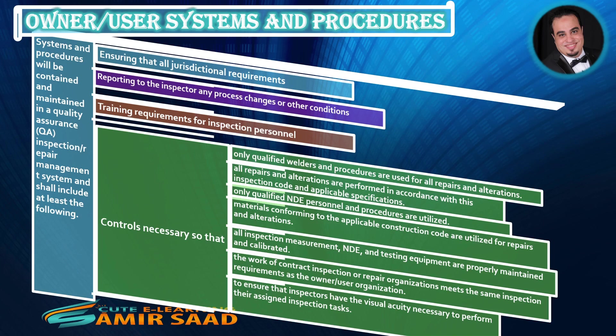All repairs and alterations are performed in accordance with this inspection code and applicable specifications. Only qualified NDE personnel and procedures are utilized. Materials conforming to the applicable construction code are utilized for repairs and alterations. All inspection measurement, NDE, and testing equipment are properly maintained and calibrated. The work of contract inspection or repair organizations meets the same inspection requirements as the owner-user organization. To ensure that inspectors have the visual acuity necessary to perform their assigned inspection tasks.